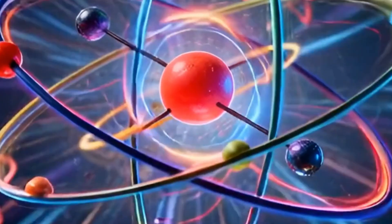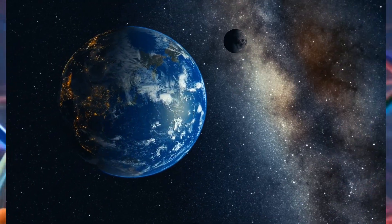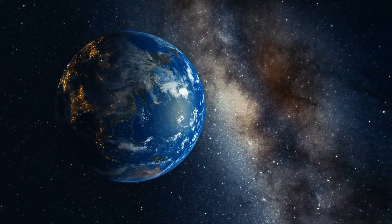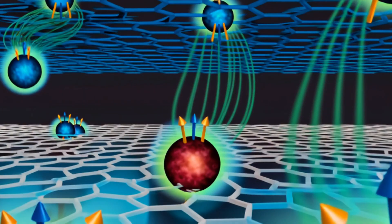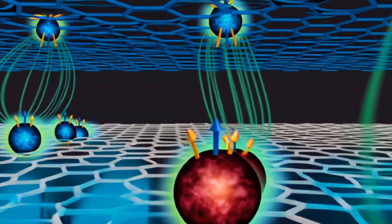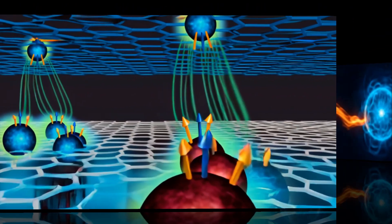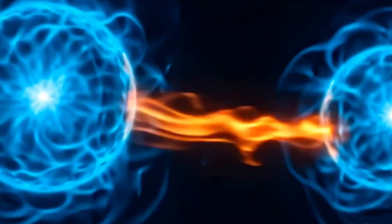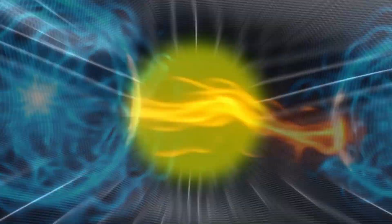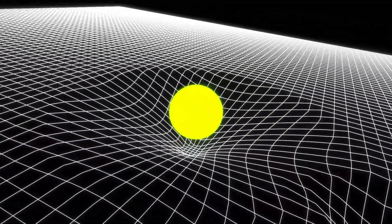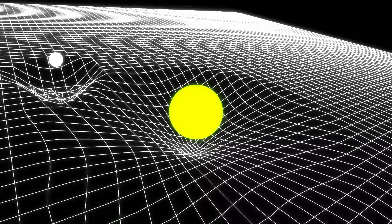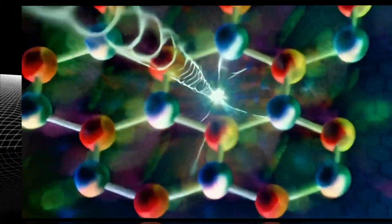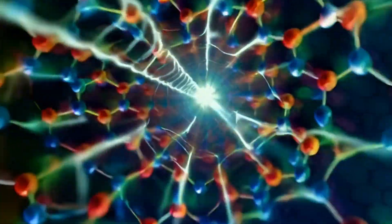On one side, you have planets, stars, and entire galaxies following the rules of Einstein. On the other side, you have the insane, bizarre world of atoms and particles where everything is based on pure chance. For an entire century, these two sets of rules have been at war. If you try to use the rules for gravity on tiny particles or the other way around, the math literally breaks and screams at you that you're missing something huge.